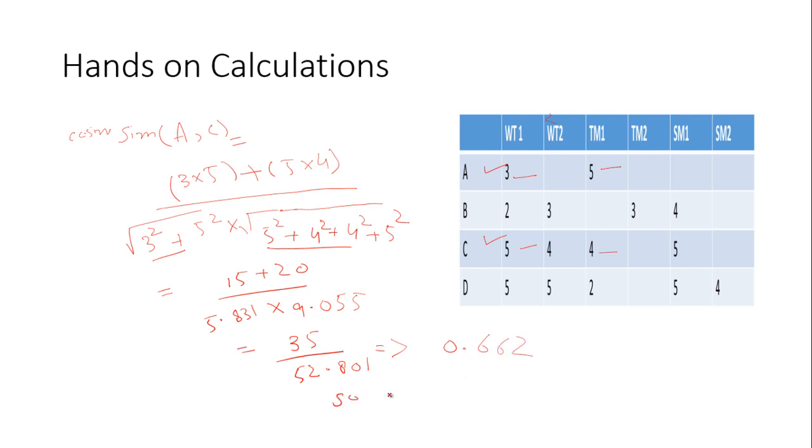Equals to 35 divided by 52.801, it implies 0.662. So cosine similarity of A and C equals to 0.662.